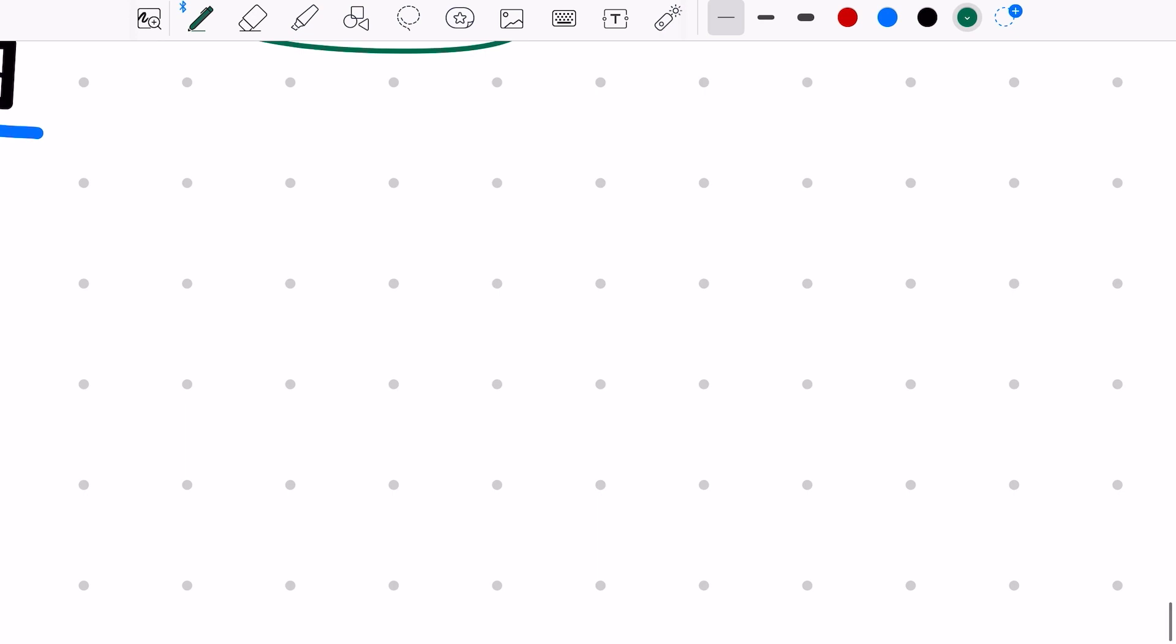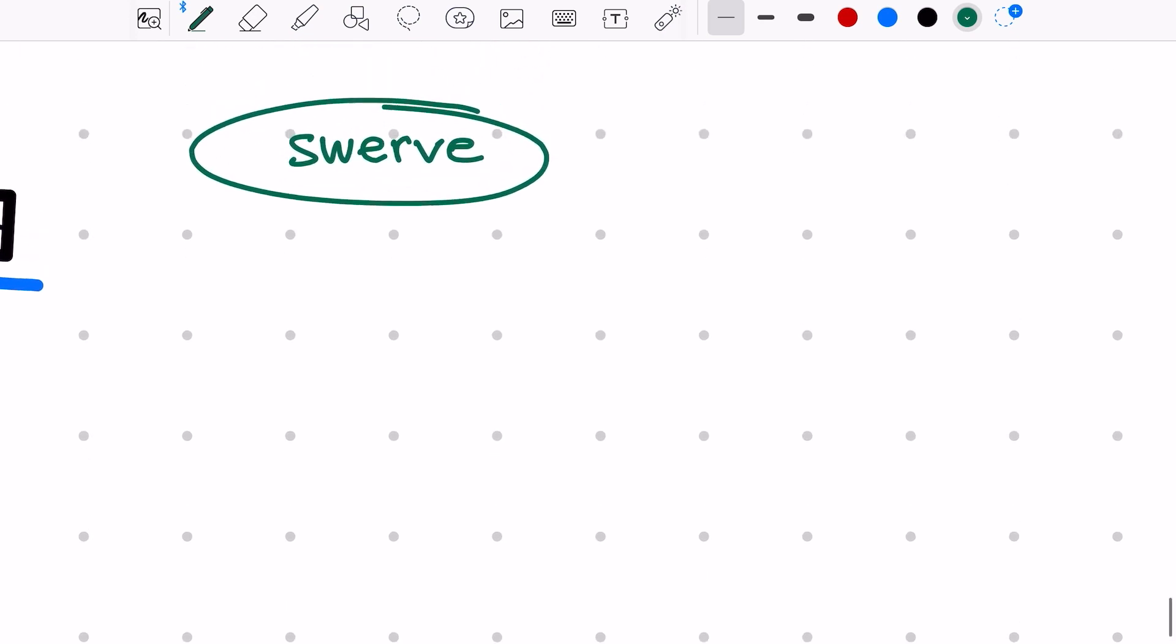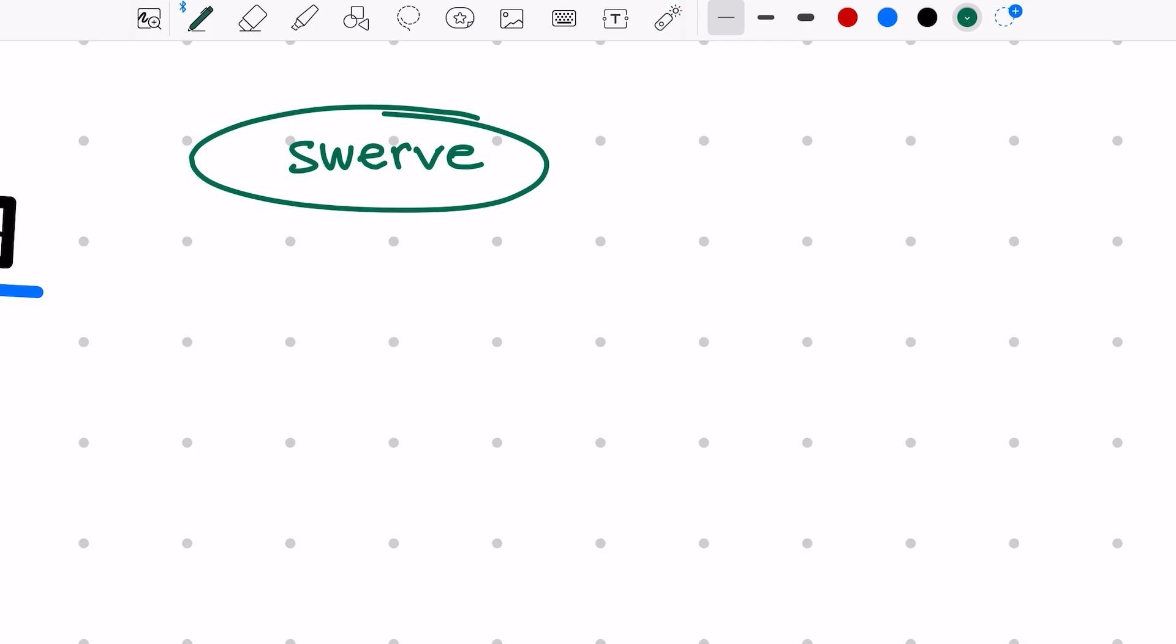Now one instance where the West Coast Drive Base would still be useful is if the game had a different terrain. So if it wasn't just flat ground and it had more bumps, then we might choose to go with the West Coast Drive Base.